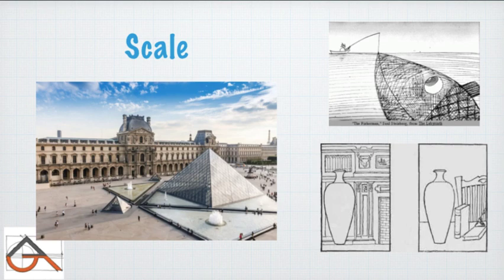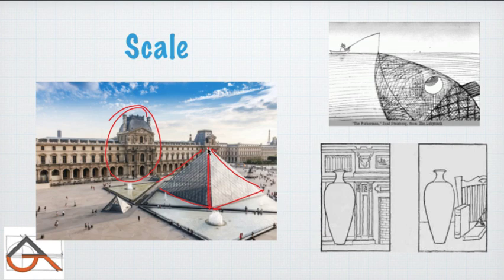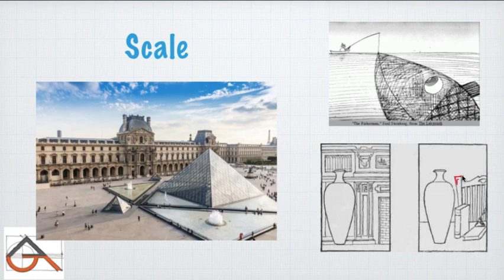Scale is very important when you do your composition. For example, the layers of a building — the scale matters. When you change the background size, the same object appears much larger, so this technique can be used effectively in your drawings.